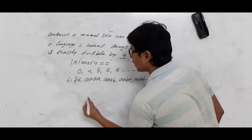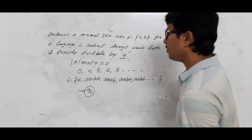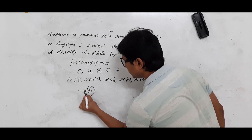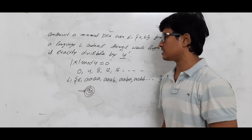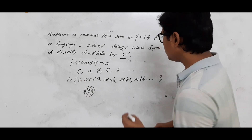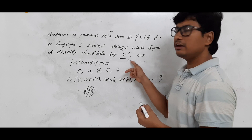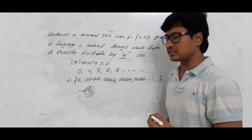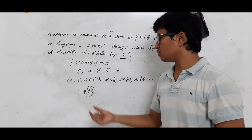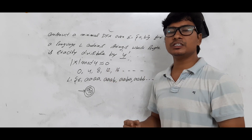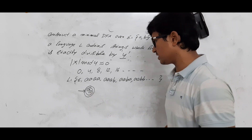The DFA should accept strings whose length is 0, which is epsilon. The initial state is Q0. When I say Q0 is accepted, it means the initial state is also acting as a final state — because to accept epsilon, by taking an empty string from the initial state, you should reach the final state. So obviously the initial state must act as a final state.